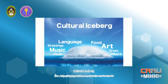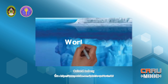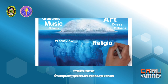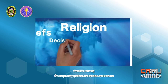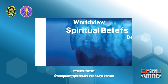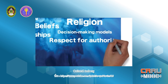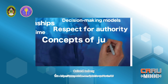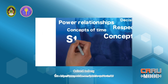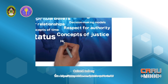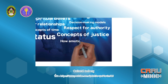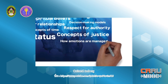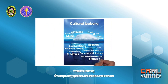These aspects are not immediately visible. They can include worldview, religion, spiritual beliefs, decision-making models, power relationships, respect for authority, concepts of time, and many others. These are the implicit manifestations of culture. They can exert an important influence over behavior, values, feelings, and thoughts. The more immersed we become in a cultural environment, the more these hidden aspects are revealed to us.